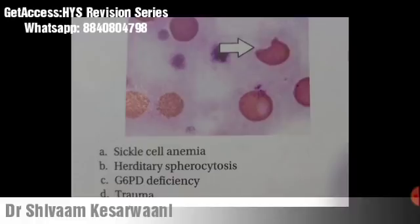Can you name this condition and the cell shown here? Yes, this is G6PD deficiency showing a bite cell or degma site. A degma site is another name for a bite cell — an abnormally shaped RBC with one or more semicircular portions removed from the cell margin. To differentiate bite cells from schistocytes: bite cells have a smaller missing portion, while schistocytes show a bigger fragment missing from the RBC.